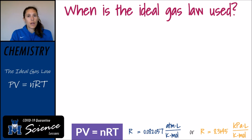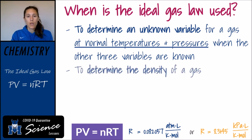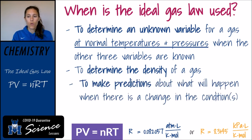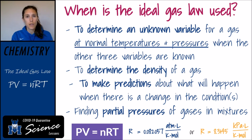When do we use the ideal gas law? We can use it to determine an unknown variable, to determine the density of a gas, to make predictions about what will happen when there is a change in conditions — very similar to what we did with the four individual gas laws — and you can also find the partial pressures of gases in mixtures, which is another application of the ideal gas law.